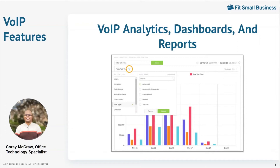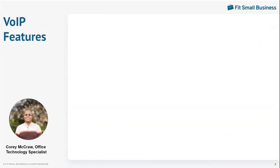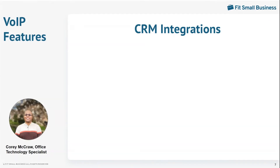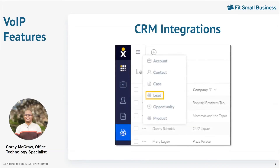By now, most business users have heard of Salesforce, which is just one type of customer relationship management solution. Most first or second tier VoIP plans allow for CRM integration, so that customer data will automatically pop up when contact is made. This type of integration also provides a single solution for both outreach and data delivery, so that your agents won't have to manage customer information in one application while calling on another. This is an example of Nextiva's CRM integration, which is extensive.